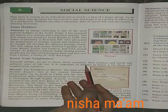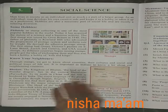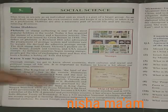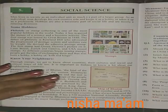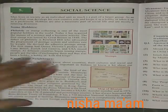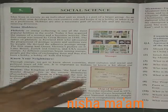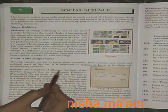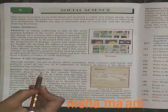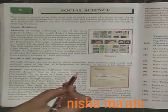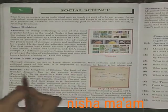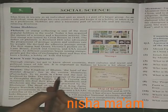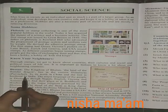It is important as Indians to know a bit about our neighboring countries. Bhutan — the Kingdom of Bhutan, the land of the Thunder Dragon — lies in the eastern Himalayas. To its northeast is China, and the rest is bordered by India.